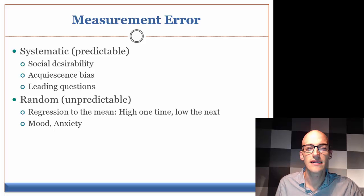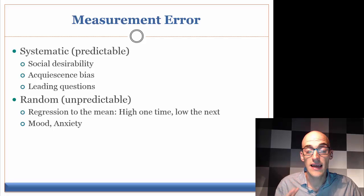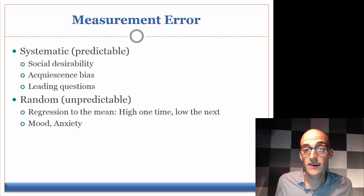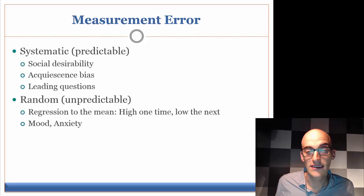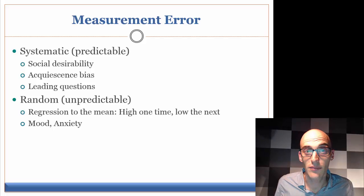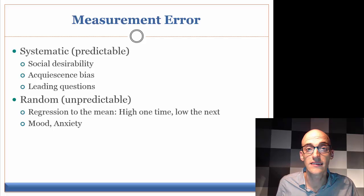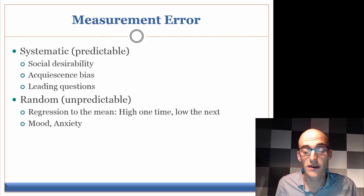Systematic error is something that's predictable — things that we can adjust for or predict ahead of time and make sure are not contaminating our data. The first example of predictable or systematic measurement error is social desirability. The book talks about having an interviewer ask about race in regards to election polling, but you could imagine a ton of different questions where this would come into play — how somebody not wanting to be perceived as racist or sexist, or simply wanting to go along with what they think the researcher would agree with, could influence the way people respond to questions.